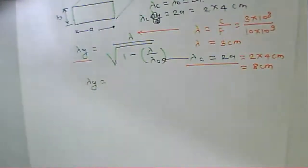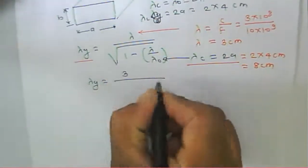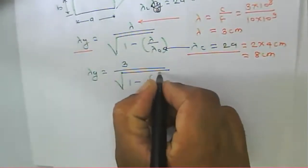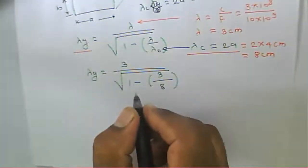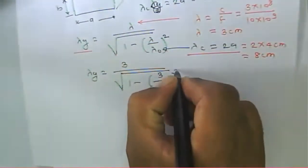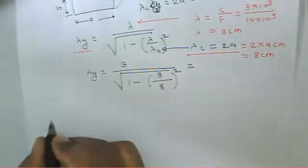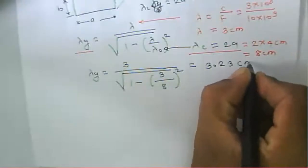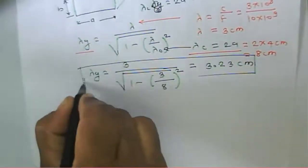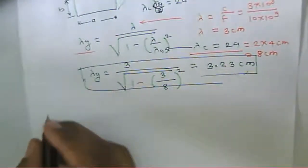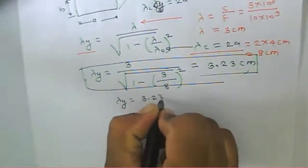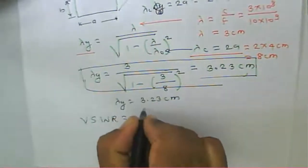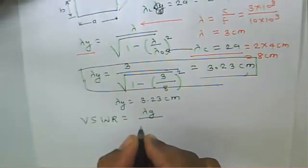To obtain lambda g, we substitute the values: lambda is 3 centimeters, lambda c is 8 centimeters. We compute one minus lambda over lambda c, that is three over eight. After solving, we get the guide wavelength lambda g. Lambda g becomes approximately 3.2 centimeters after solving.